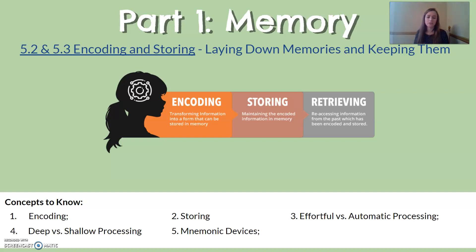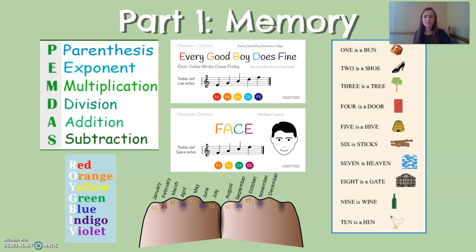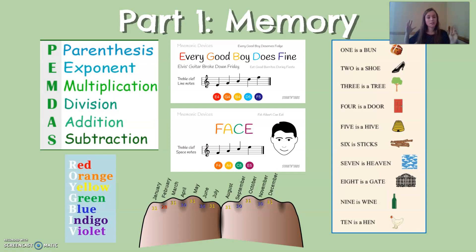Mnemonic devices are memory tools — you're probably familiar with a lot of them. They usually use tricks like acronyms, rhyming, or imagery to help you remember what you need to. The one on the right is a mnemonic device called a peg word system. People use these to remember long strings of numbers by assigning rhyming words to each number, then forming a rhyming-type sentence to help pull back the number.